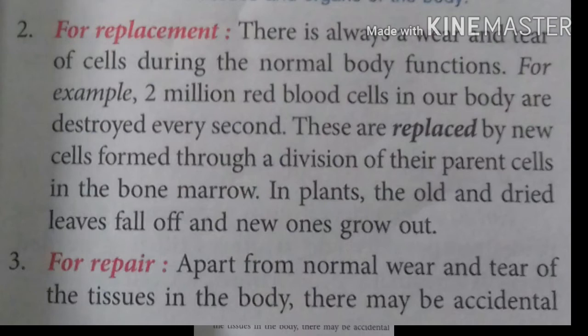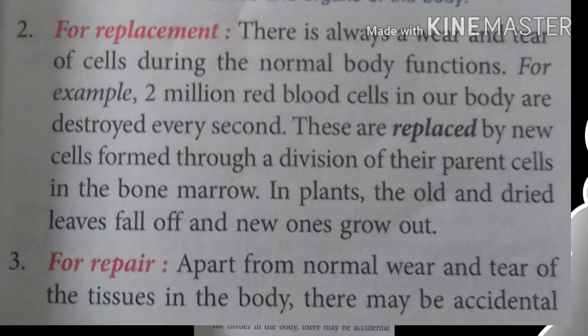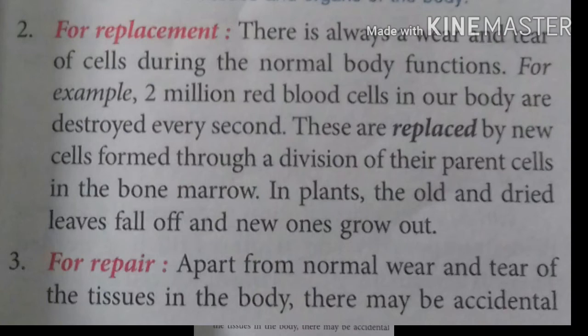Red bone marrow and white bone marrow produce blood cells. WBCs have a life cycle of 3–5 days to 1 week, and RBCs have a life span of 120 days. After that, they form again.